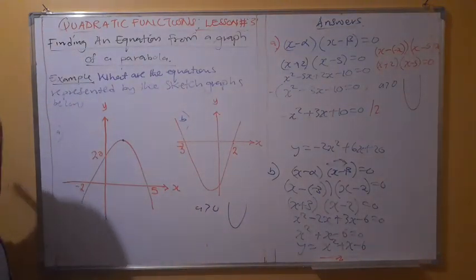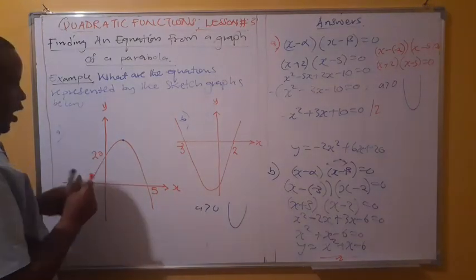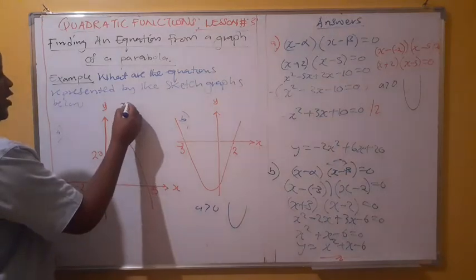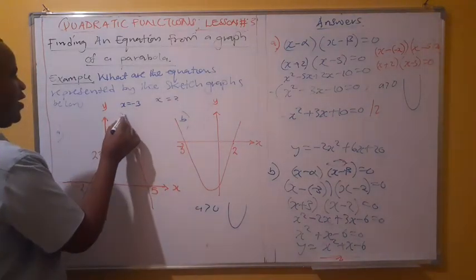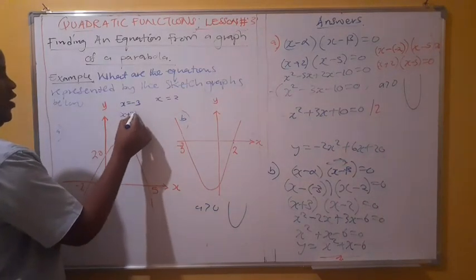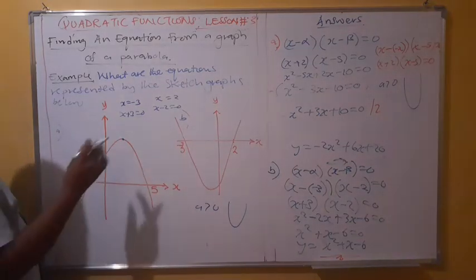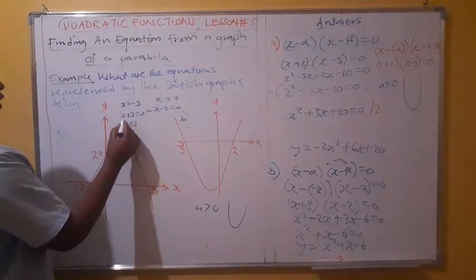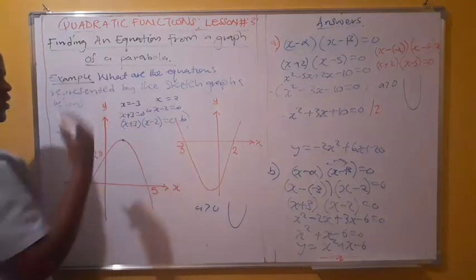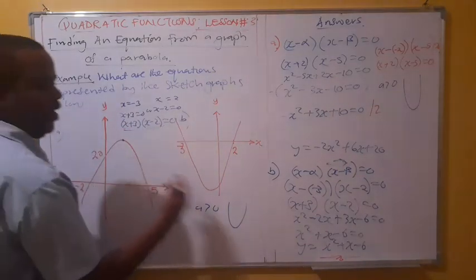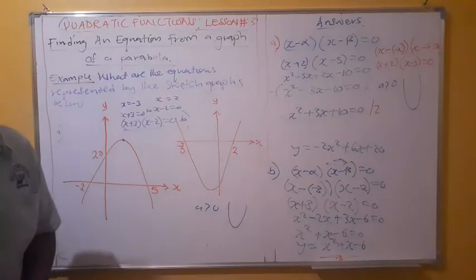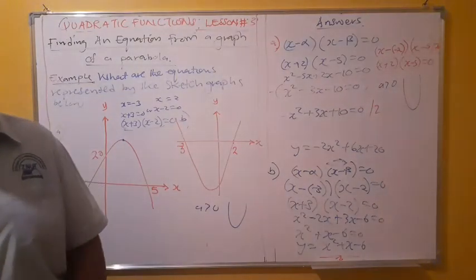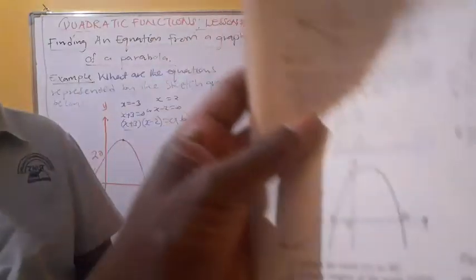If you have a problem applying that method, you can say: x-intercept is negative 3, so x plus 3 equals 0; and x-intercept is 2, so x minus 2 equals 0. Then expand x plus 3 times x minus 2, and you'll still arrive at the same result. I hope that is clear. Maybe I can give you something to try. That's where we end for this presentation. Thank you so much.